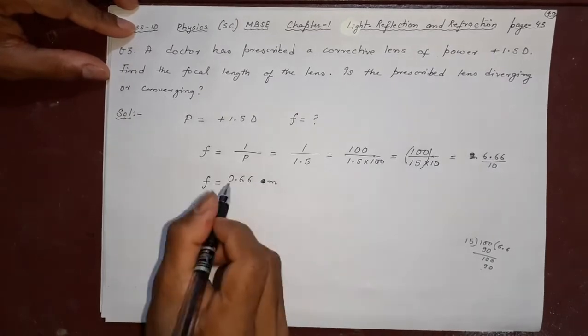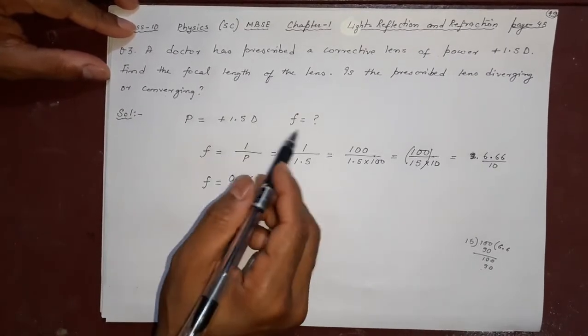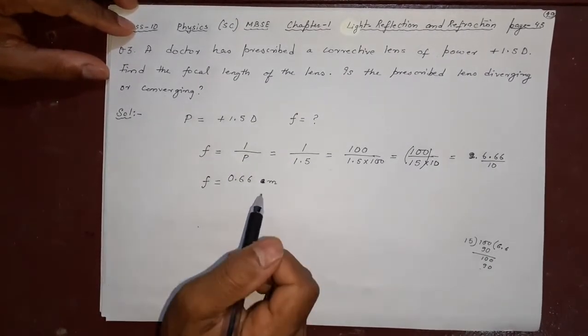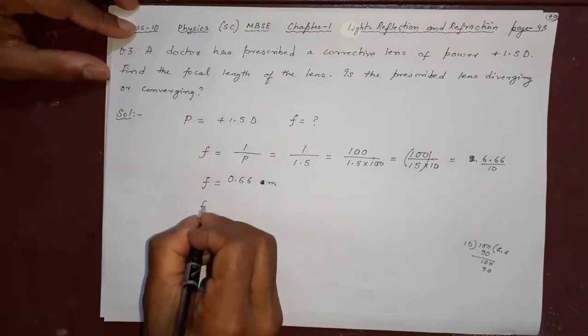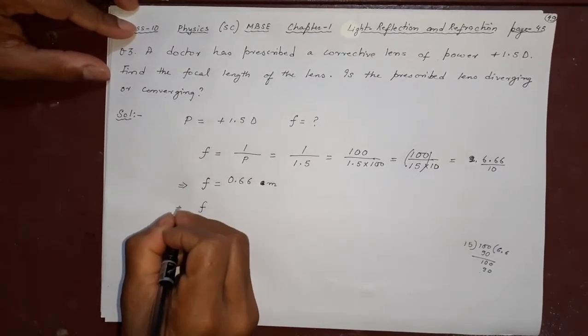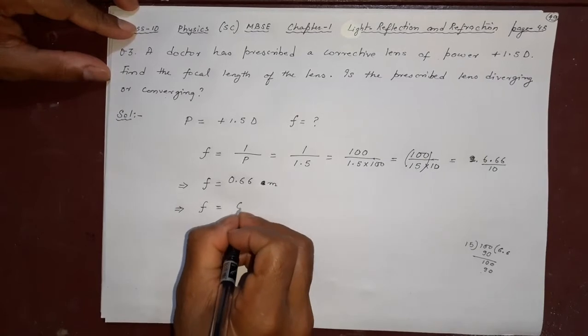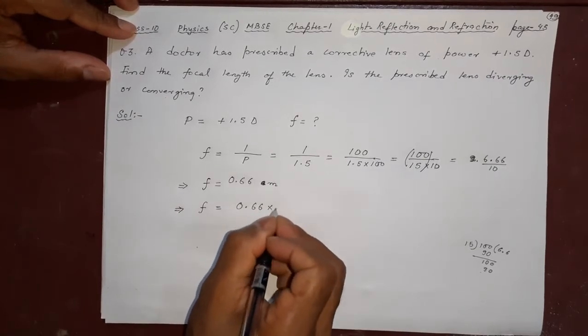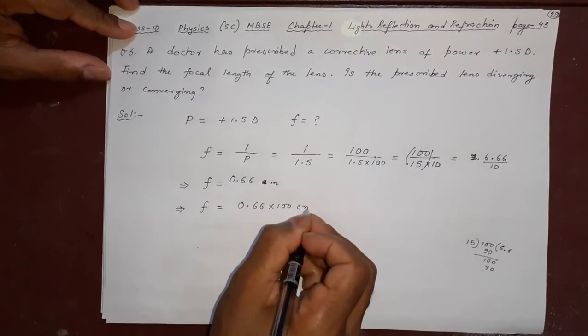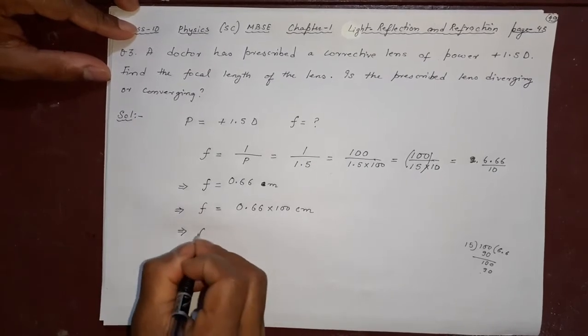Meter, because power and focal length relation is in meter. Now I need to convert into centimeter. How to convert meter into centimeter? Multiply by 100. 0.66 into 100, now it becomes centimeter.